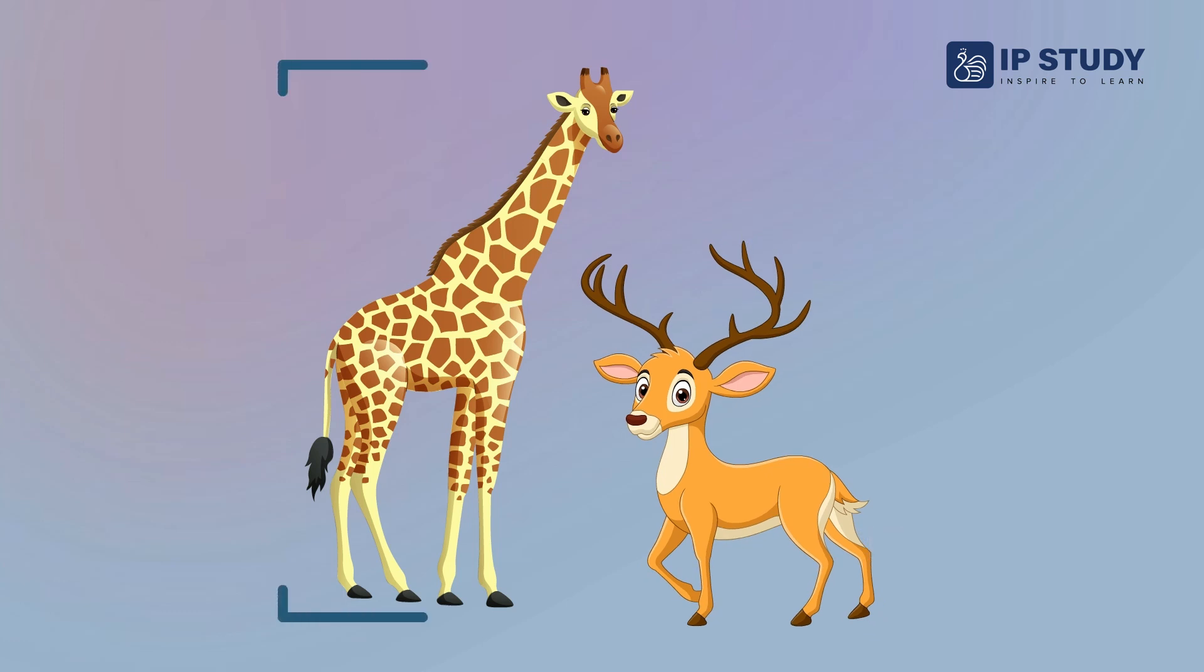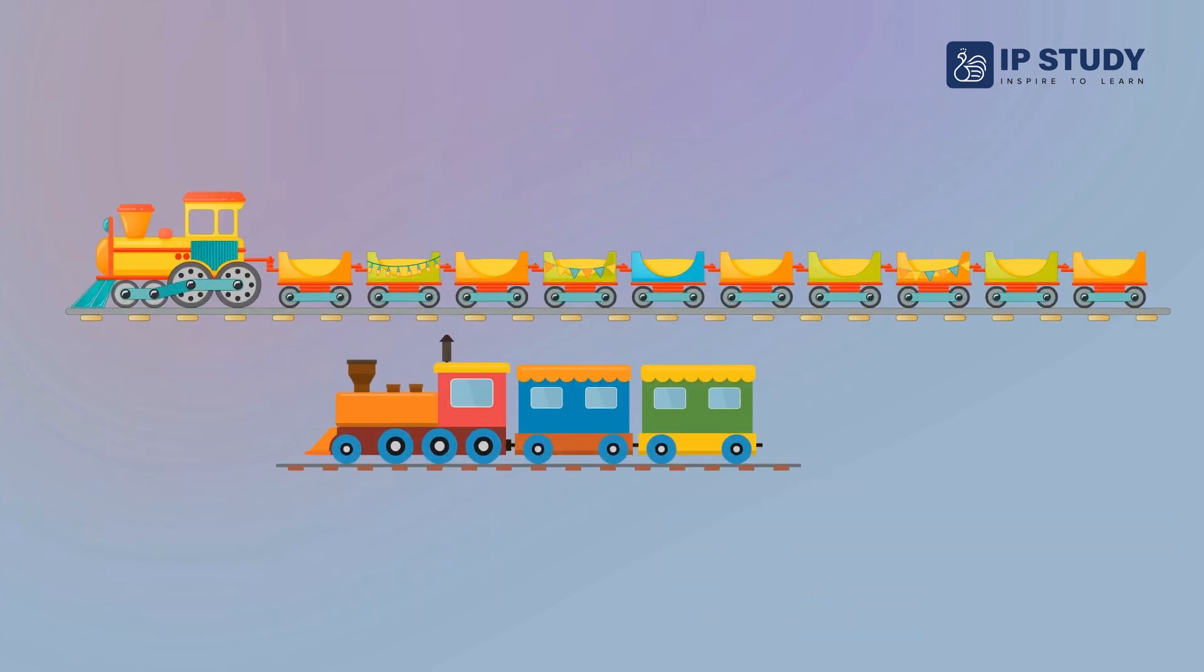Look at these animals. This is a long giraffe and this is a short deer. Look at these toy trains.